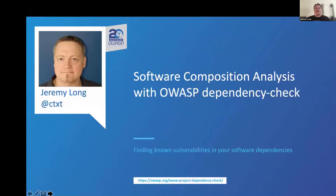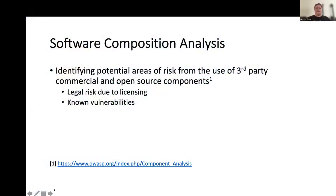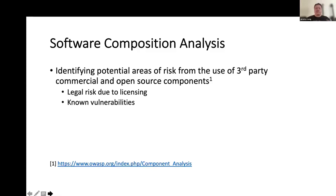I'm always surprised at how and where Dependency Check gets used. So I hope software composition analysis in this day and age doesn't need to be explained — when I started Dependency Check, it absolutely did. But this is the obligatory slide. Basically, we're identifying potential areas of risk from the use of third-party commercial and open source components. The primary risks are legal risk and known public vulnerabilities. Dependency Check itself doesn't do a whole lot for the legal risk — it will report what the license is if it identifies it, but that is not its primary purpose. It is primarily trying to identify known vulnerabilities within your project's dependencies.